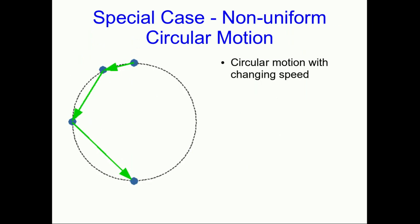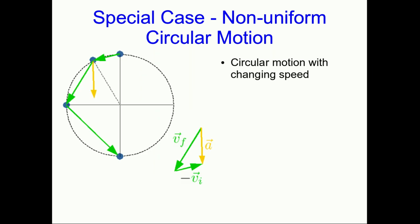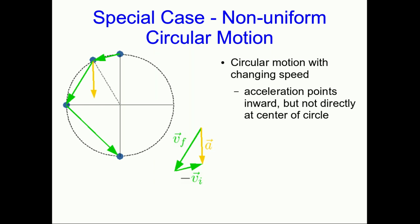A final special case is non-uniform circular motion — circular motion with a changing speed. Here's a motion diagram for circular motion where the object is speeding up as it goes around the circle. Finding the acceleration via vector subtraction, we see that the acceleration vector still points inward, but not directly toward the center. Because the object is speeding up, there has to be a component of the acceleration that points forward. And there still has to be an inward component, because for the trajectory to be curved, there must be a component of the acceleration pointing to the inside of the curve.